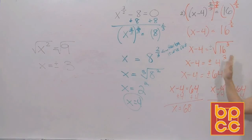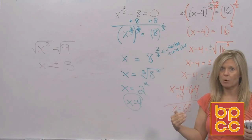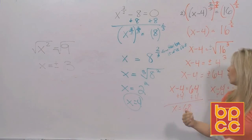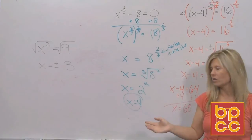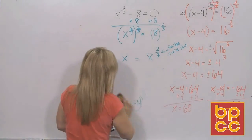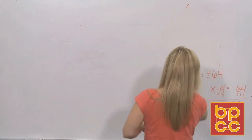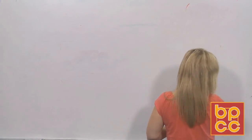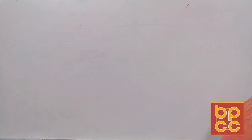Solving each linear equation: adding 4 gives x equals 68, and negative 64 plus 4 gives x equals negative 60. We get two solutions. The key rule: if the rational exponent changes to a square root, you must include plus or minus for two solutions; if it changes to a cube root, you keep only one solution.